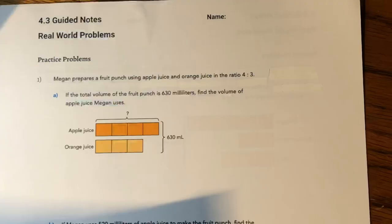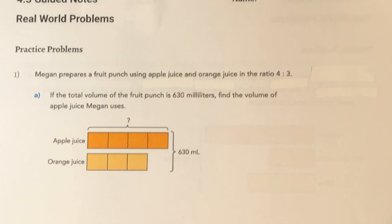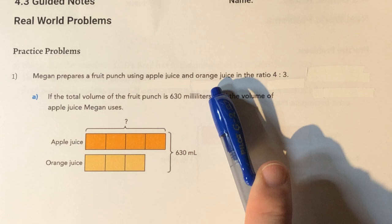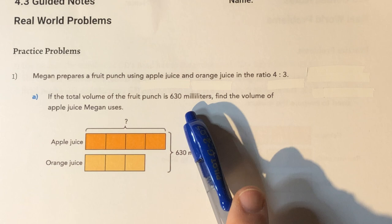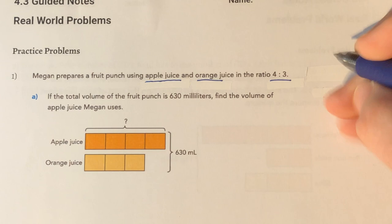So today we're going over Lesson 4.3 Real-World Problems, all about ratios. We're just going to jump right in. Our first example says: Megan prepares a fruit punch using apple juice and orange juice in the ratio of 4 to 3. If the total volume of fruit punch is 630 milliliters, find the volume of apple juice Megan uses. We're first going to take note of the ratio — apple juice to orange juice, ratio of 4 to 3.